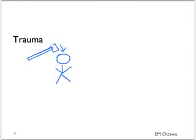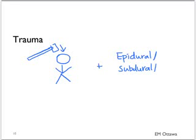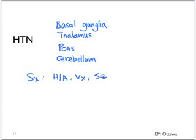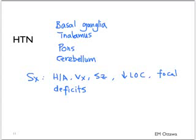We will now move on to intracerebral and parenchymal hemorrhage. Again, it can be divided into traumatic and non-traumatic causes. Trauma is caused by direct head injury and is often associated with other bleeds; the extent of the bleed determines the patient's presenting complaint and neurological status. For non-traumatic intracerebral bleeds, the main risk factor is hypertension. Common sites include the basal ganglia and thalamus, pons, and the cerebellum. The patient will present with sudden onset headache, vomiting, seizure, decreased level of consciousness, and focal neurological deficits corresponding to the part of the brain affected. The risk of intracerebral bleeds also increases with the use of sympathomimetic drugs.